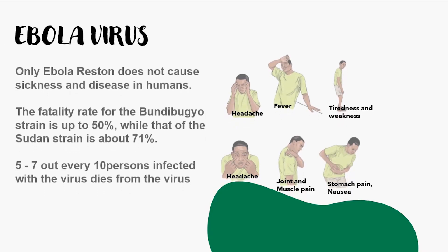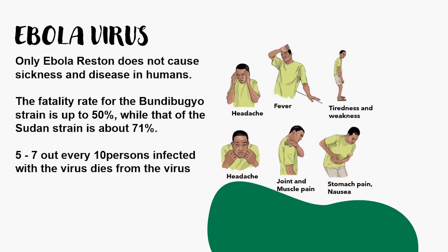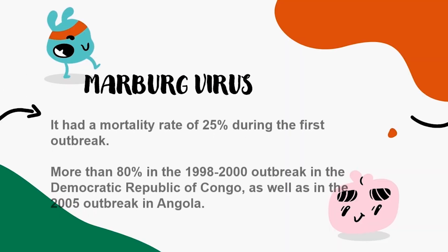Ebola virus: Going by information provided by the World Health Organization, although Ebola-Reston is the only strain that does not cause sickness in humans, the fatality rate for the Bundibugyo strain is up to 50%, while that of the Sudan strain is about 71%. 5 to 7 out of every 10 persons infected with the virus dies.